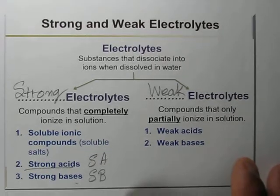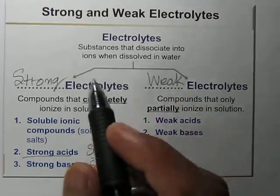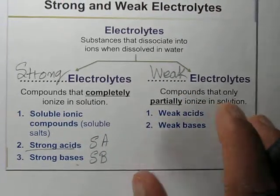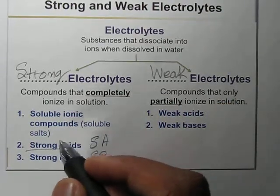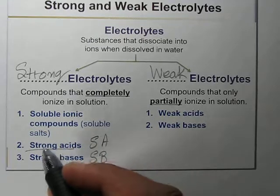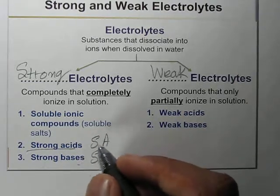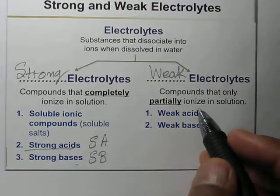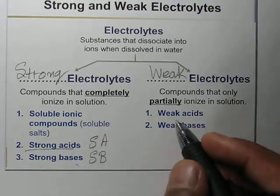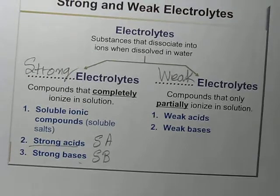Electrolytes are further classified into two groups: strong electrolytes and weak electrolytes. Strong electrolytes are compounds that completely ionize in solution — for example, soluble ionic compounds (soluble salts), strong acids, and strong bases. Weak electrolytes are compounds that only partially ionize in solution, for example weak acids and weak bases.